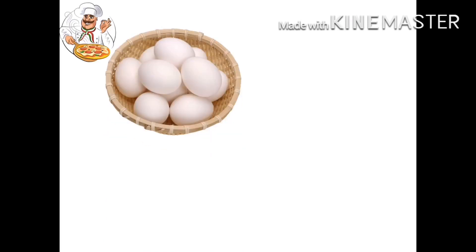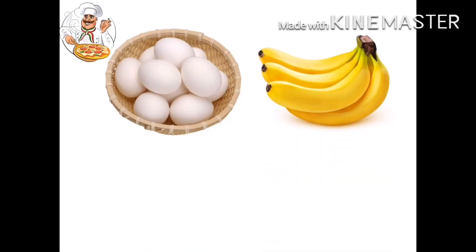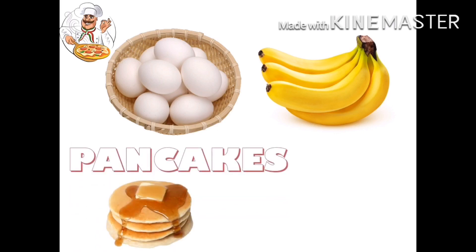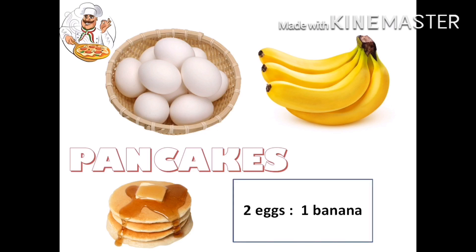Before we go to the discussion, let me share first a simple but delicious snack that we can prepare at home. We only need two ingredients: eggs and bananas. Can you guess what snack we can prepare out of these two ingredients? Right — pancakes! Recipes for pancakes vary, but they typically have a ratio of two eggs to one banana.